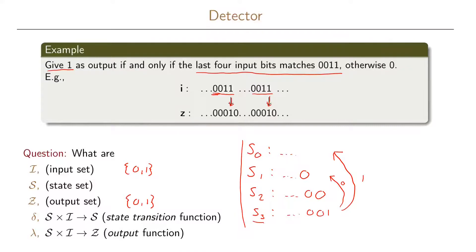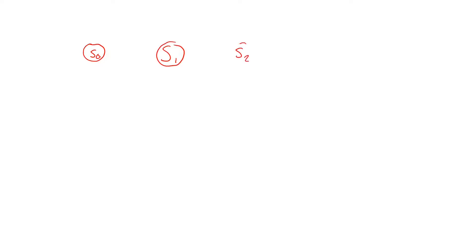Now we want to define our state transition function delta and our output function lambda by drawing the state transition graph. After defining our states in this way, it is quite straightforward to draw the graph. We have four states: S0, S1, S2, and S3. Remember that what we want to detect is the sequence 0011.